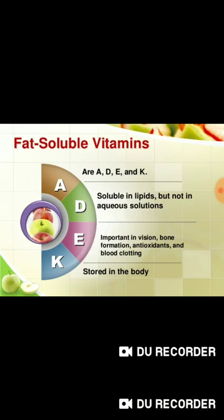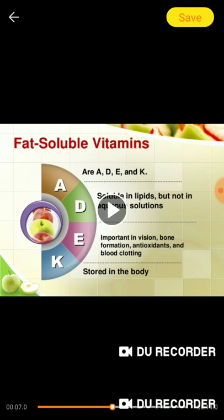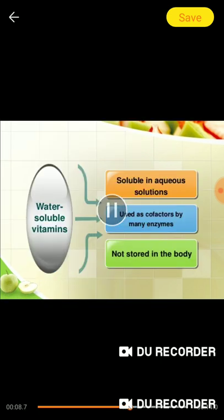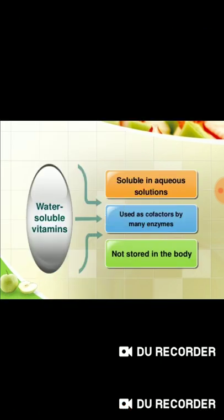Fat-soluble vitamins A, D, E, and K are soluble in lipid but not in aqueous solution. They are important in vision, bone formation, antioxidant functions, and blood clotting, and are stored in the body. Water-soluble vitamins are soluble in aqueous solution, act as co-factors for many enzymes, and are not stored in the body.